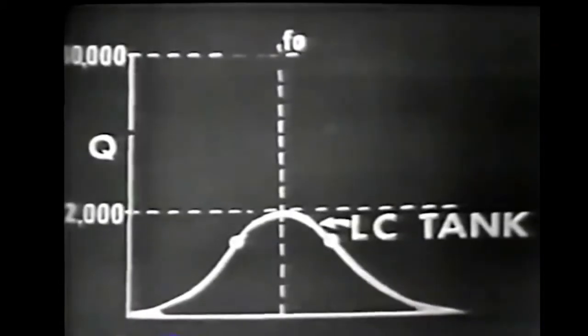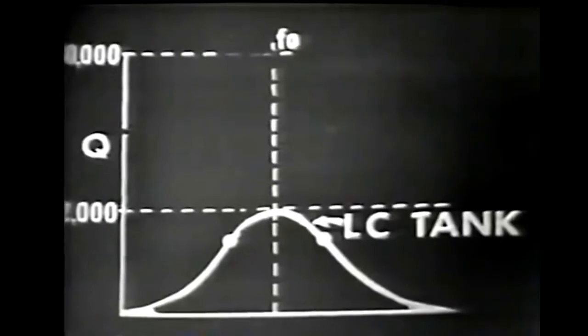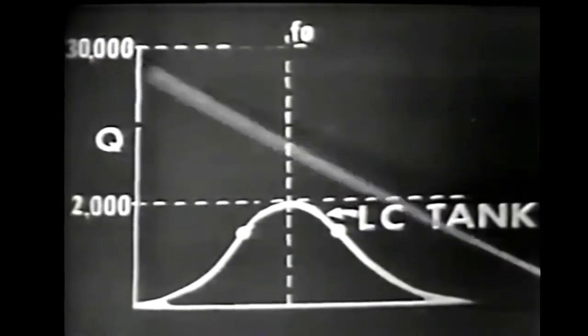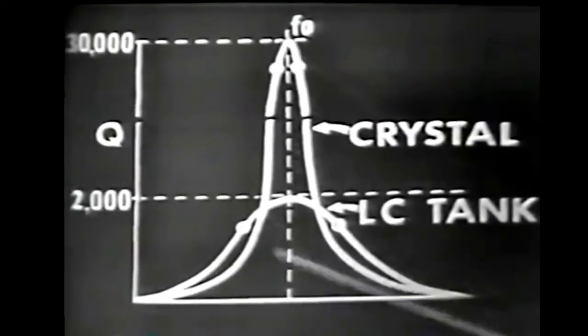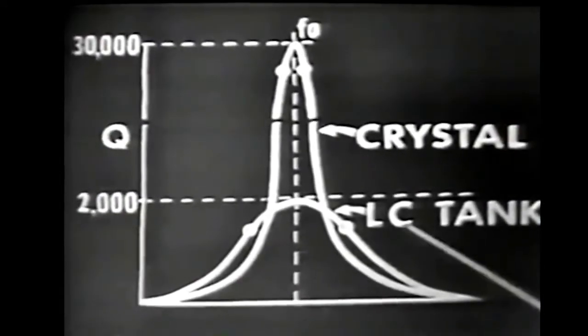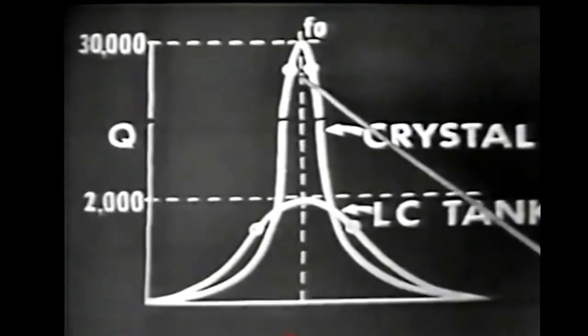Just because the vibrating crystal is equivalent to a series LC tank circuit, don't think that it's the same thing — the crystal is far superior to the LC tank circuit. The Q of the crystal circuit is many times greater than that of the LC circuit. The Q of an LC tank circuit is seldom greater than 2,000, whereas the Q of the crystal is sometimes as great as 30,000. Because of the high Q, the crystal has better frequency stability.